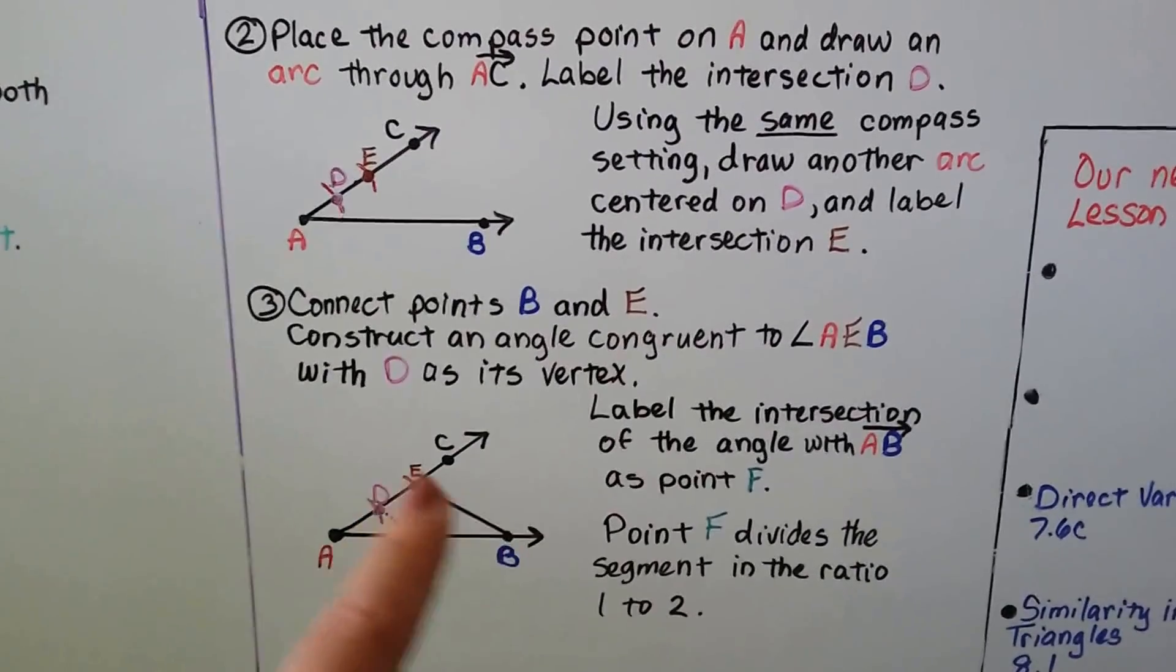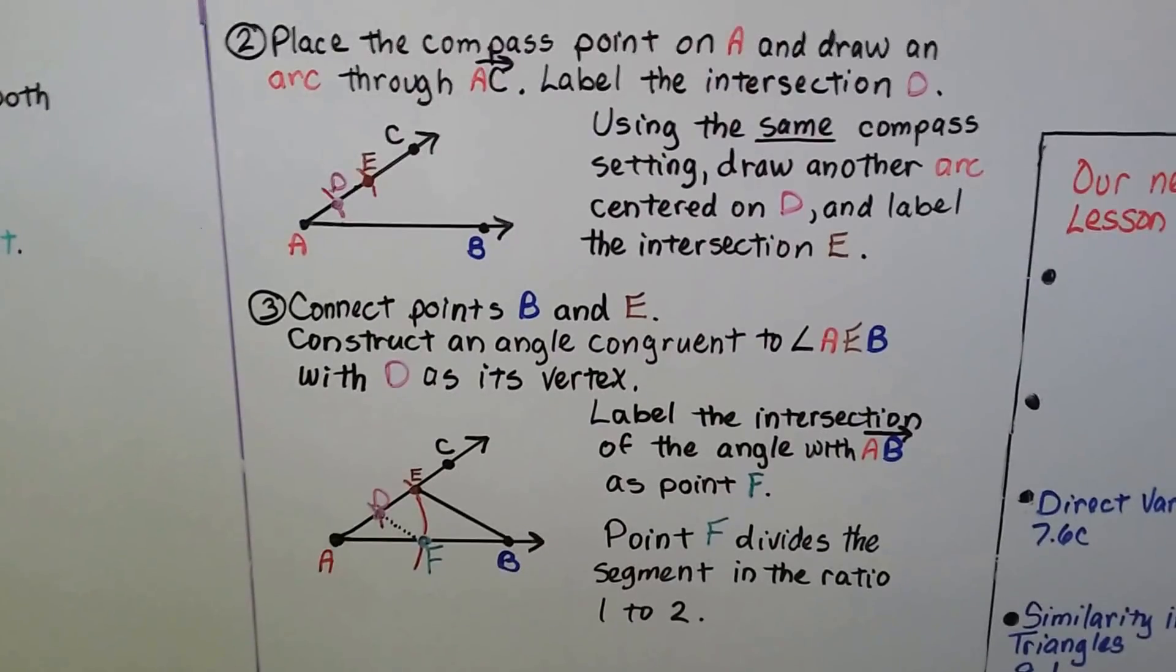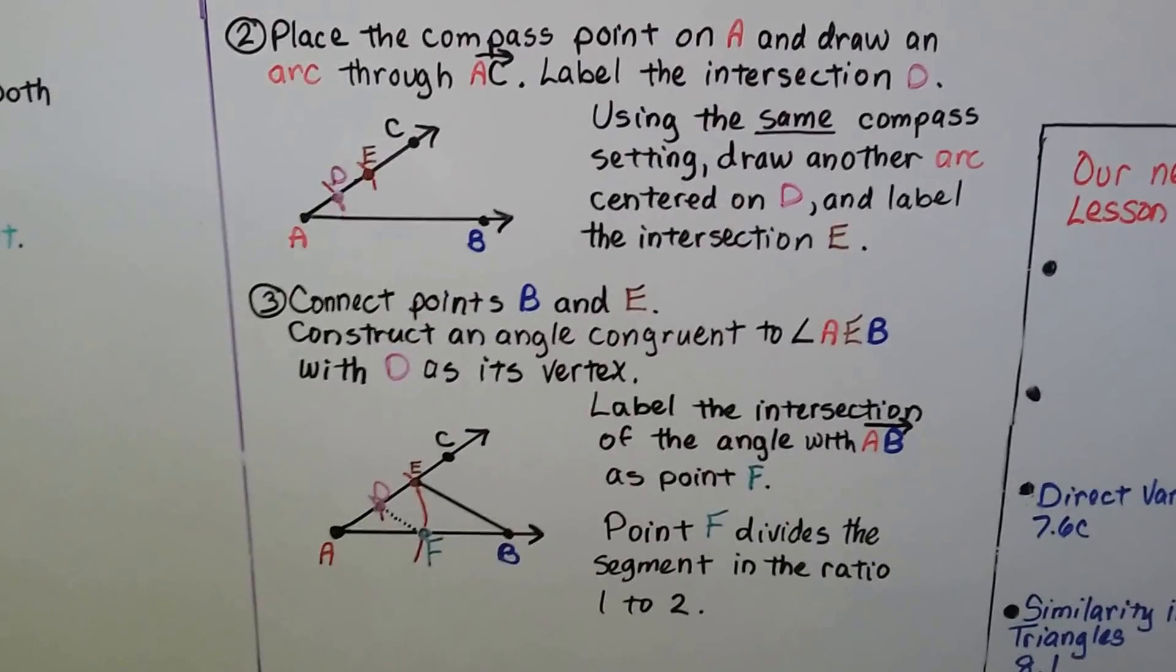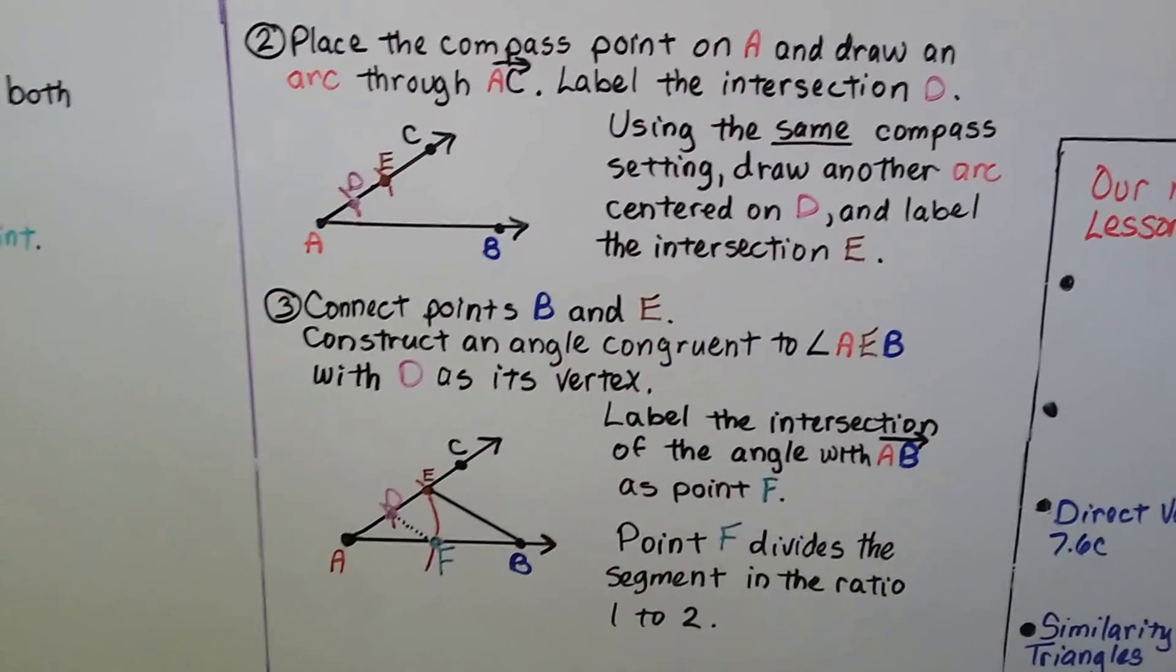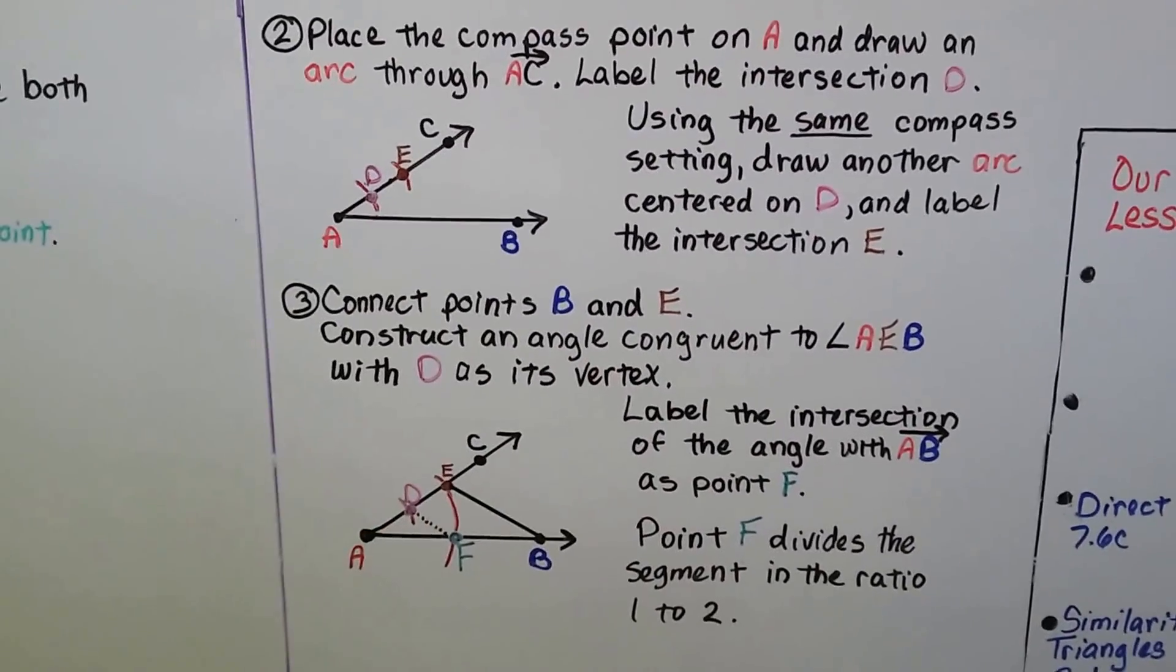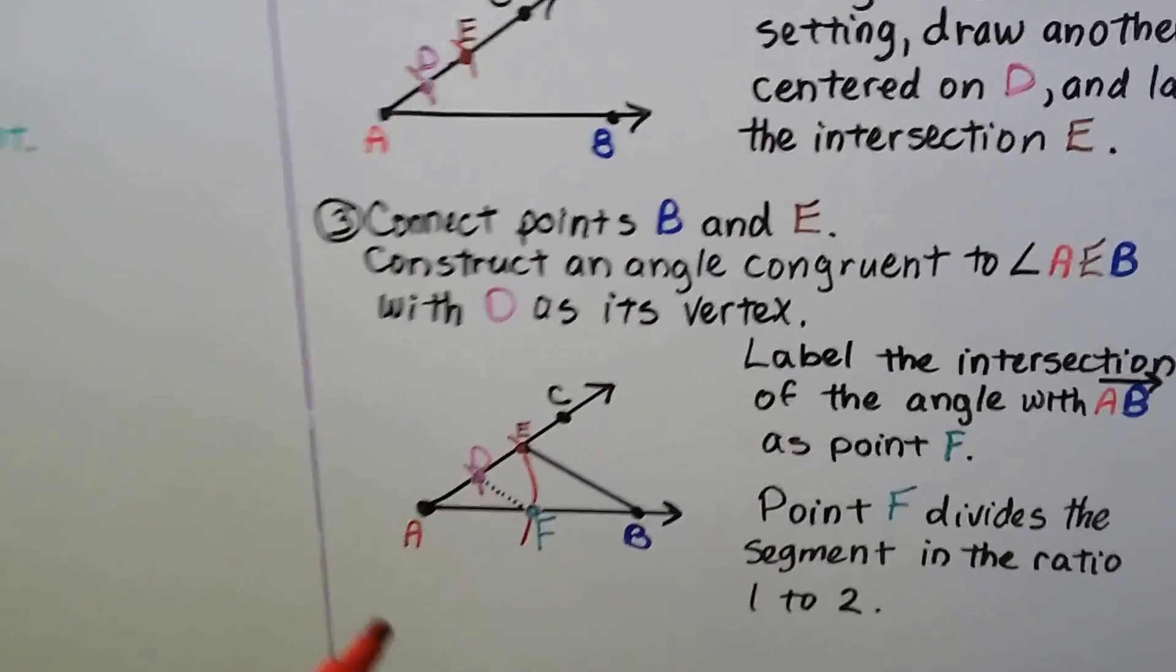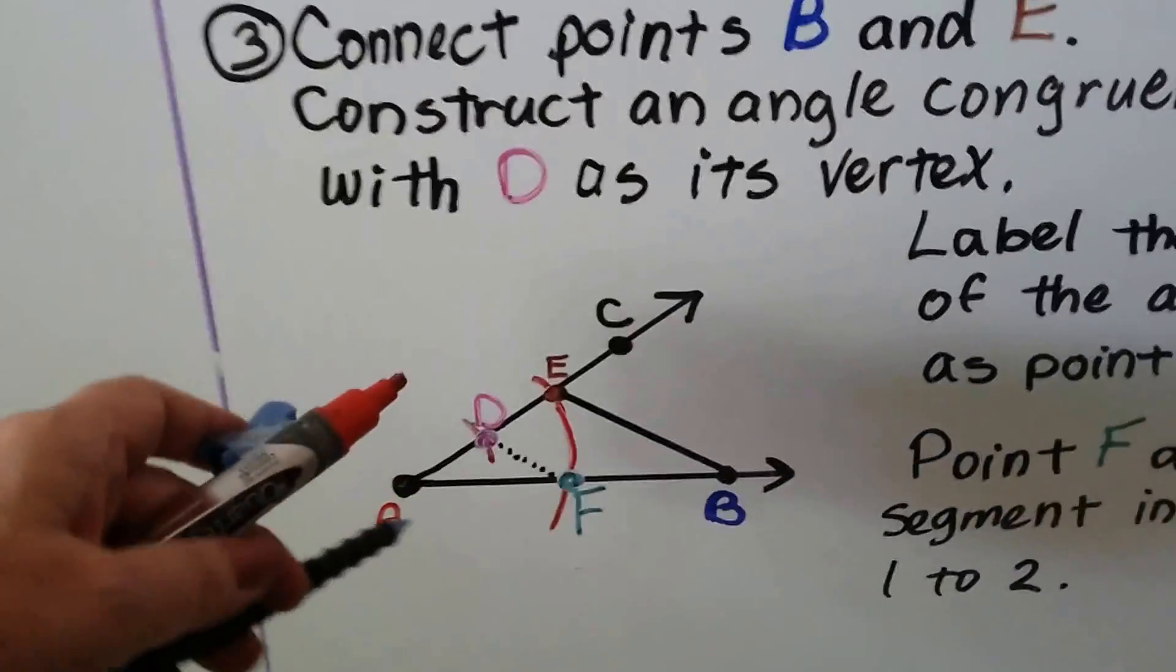Now, we connect points B and E, we draw a segment, and construct an angle congruent to angle AEB, this one right here, with D as its vertex. If you remember how to do that, what we're going to do is, we're going to take our compass, put it on A, and we're going to measure the distance between A and E.